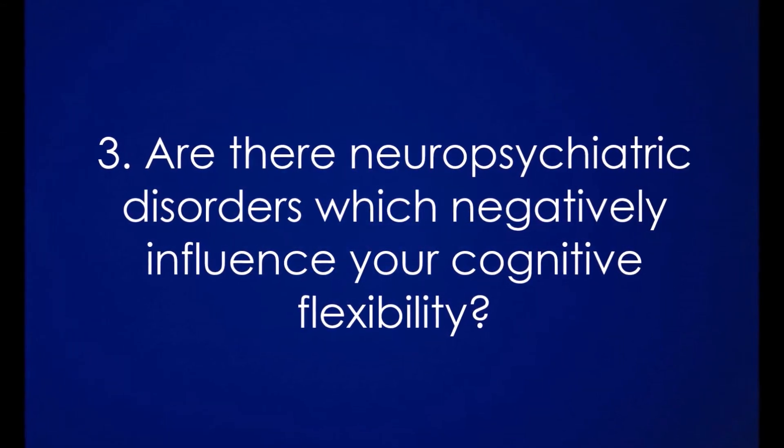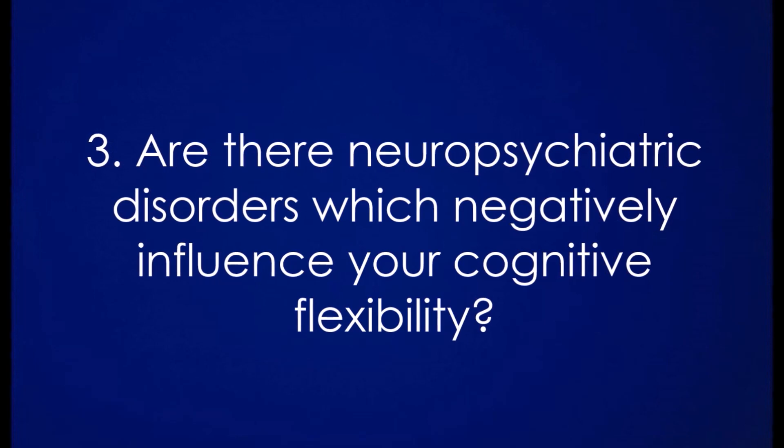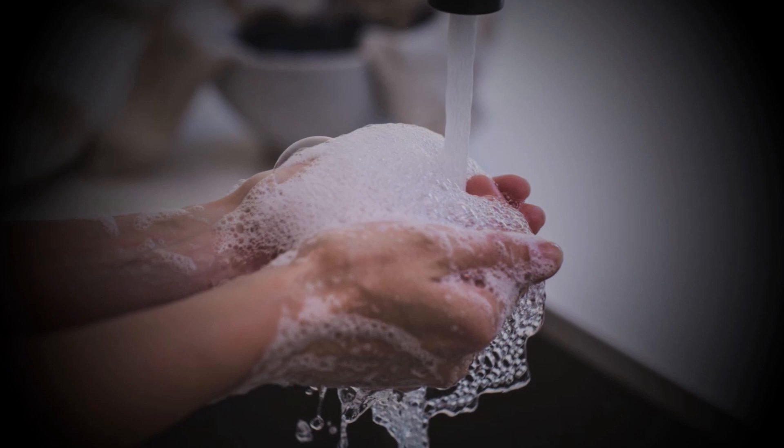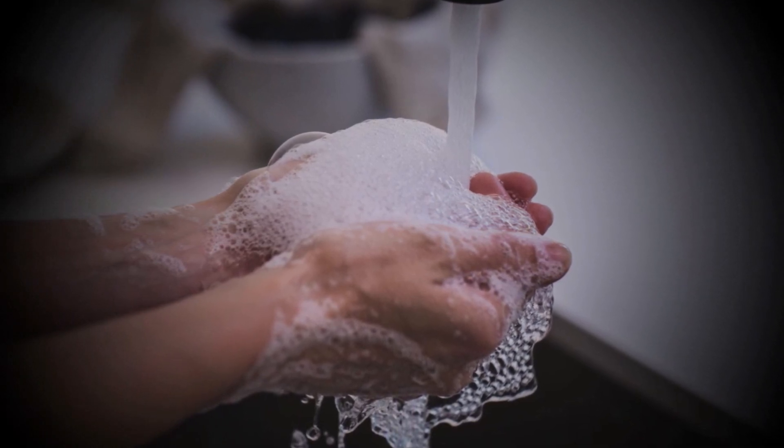Are there neuropsychiatric disorders which negatively influence your cognitive flexibility? Yes, unfortunately there are. Diminished cognitive flexibility has been noted in a variety of neuropsychiatric disorders such as anorexia nervosa, obsessive-compulsive disorder, schizophrenia, autism, and in a subset of people with ADHD. Each of these disorders exhibit varying aspects of cognitive inflexibility. For example, for those with OCD, it's hard to shift their attentional focus and inhibit their motor responses.